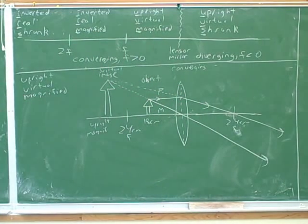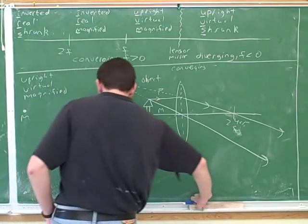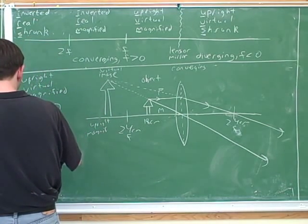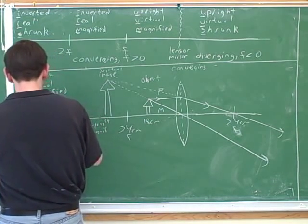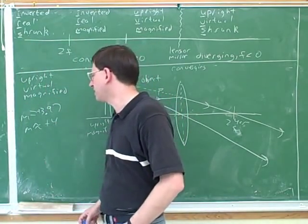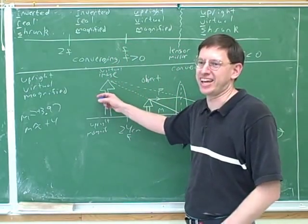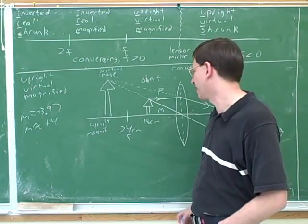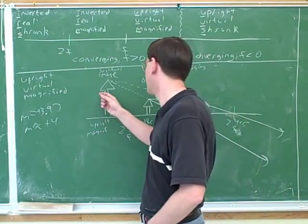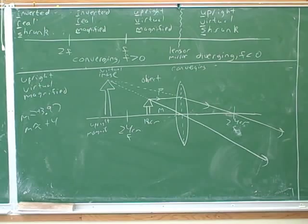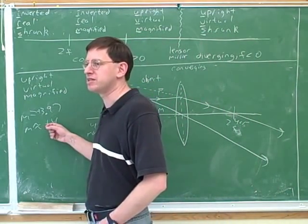The magnification calculated in the previous part of the problem was 3.97, so approximately 4. An M of 4 means the image is 4 times bigger than the object — magnification has a very straightforward interpretation. I'm not really drawing to scale here, because this didn't come out 4 times as big. This is where the algebra comes in: algebra can give you a precise answer that is hard to get from your ray tracing diagram.